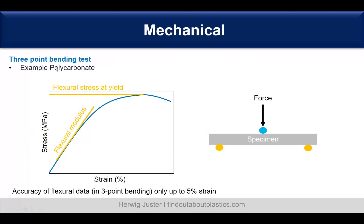The three-point bending test — using polycarbonate as an example — gives us a stress-strain curve where the specimen is bent in the middle with a force until complete bending. We can obtain the flexural modulus and flexural stress at yield. A rule of thumb: the accuracy of flexural data in the three-point bending setup is only reliable up to 5% strain. Above that limit you will see the stress drop, so you always have to check where the yield point is.